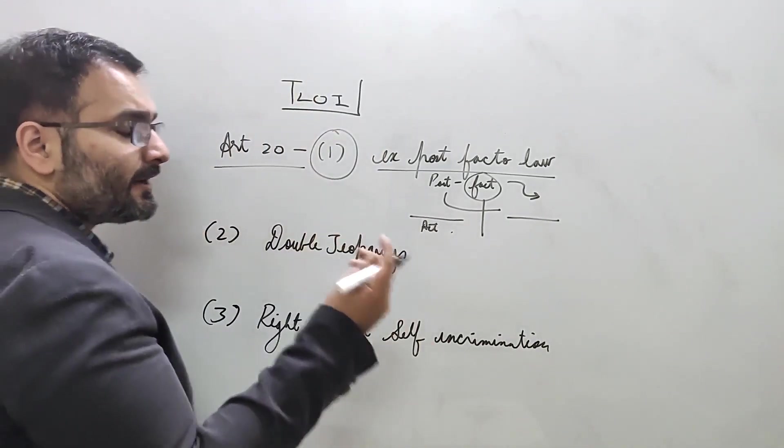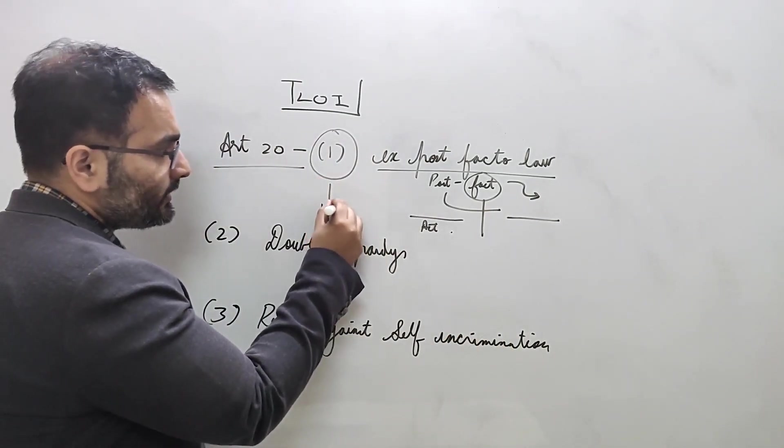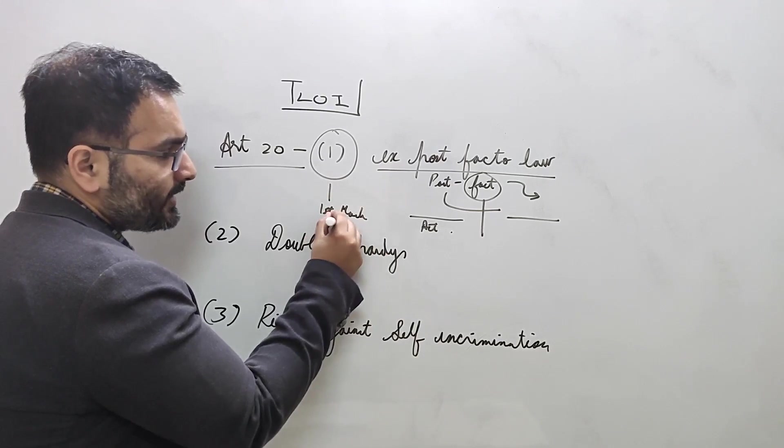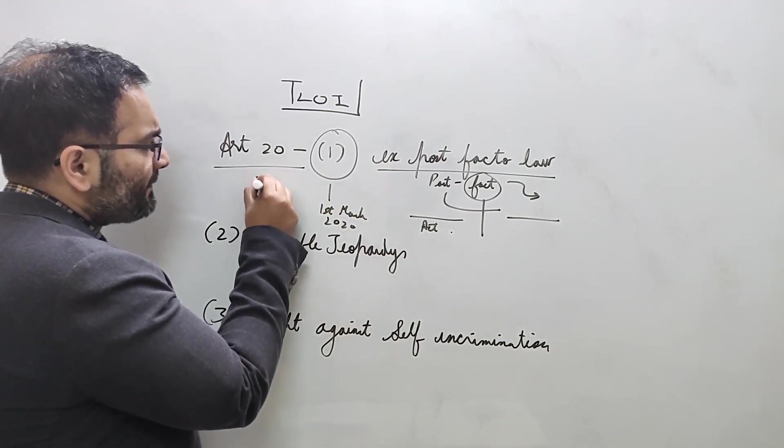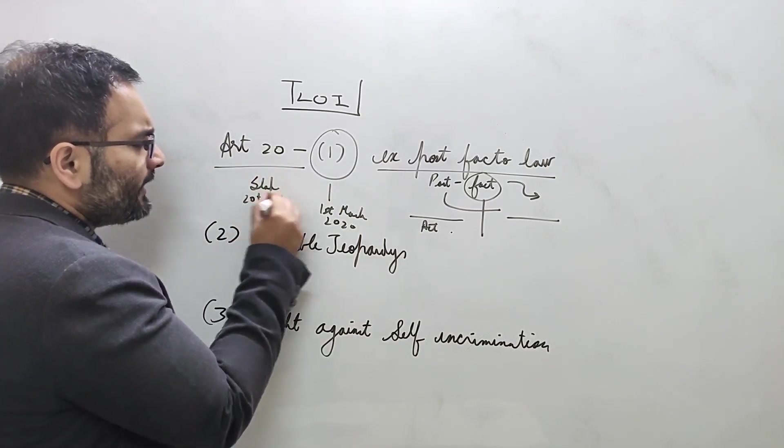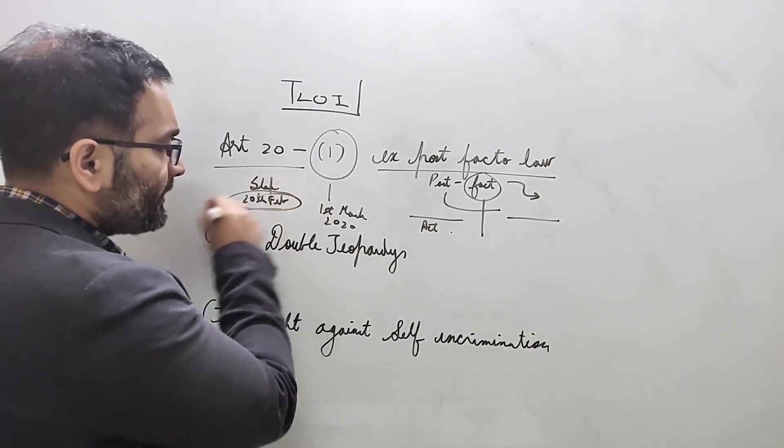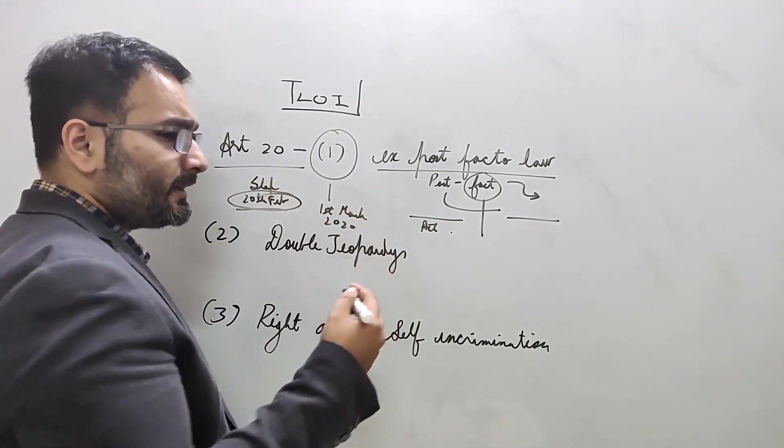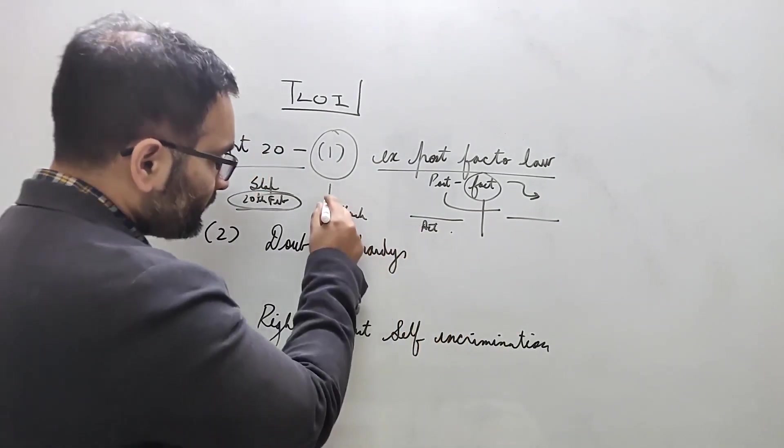What does that mean? Retrospective application. For example, let's say you slap someone on 20th February, and hypothetically assume that it is not an offense on 20th February 2020. But then Modi ji says we will make a law for this. So on 1st March 2020, a law comes that now slapping someone is an offense.